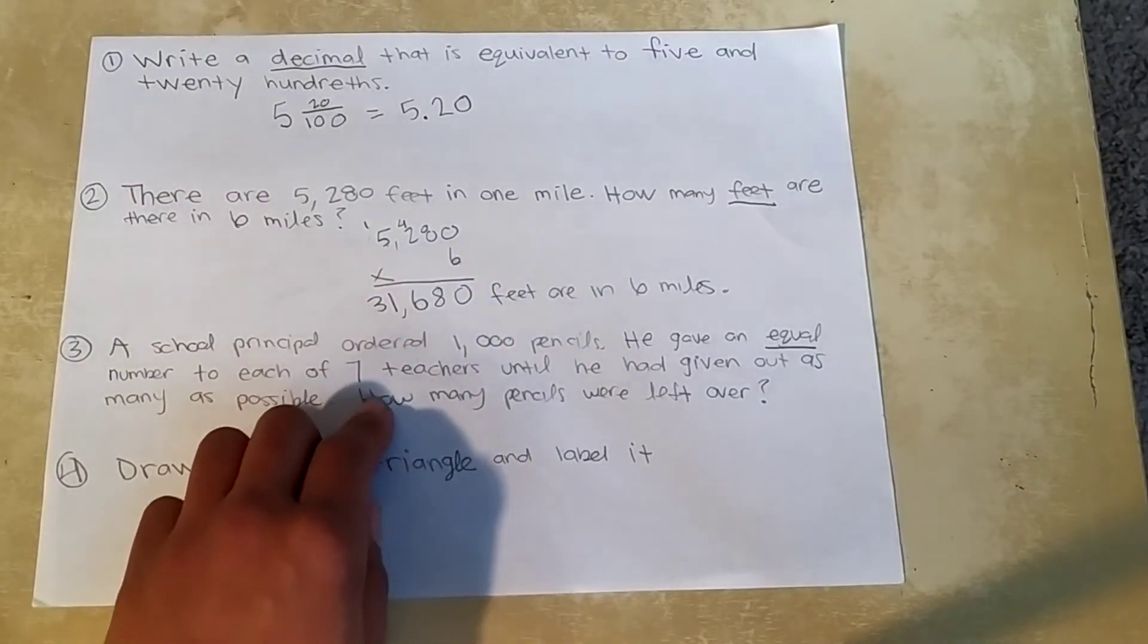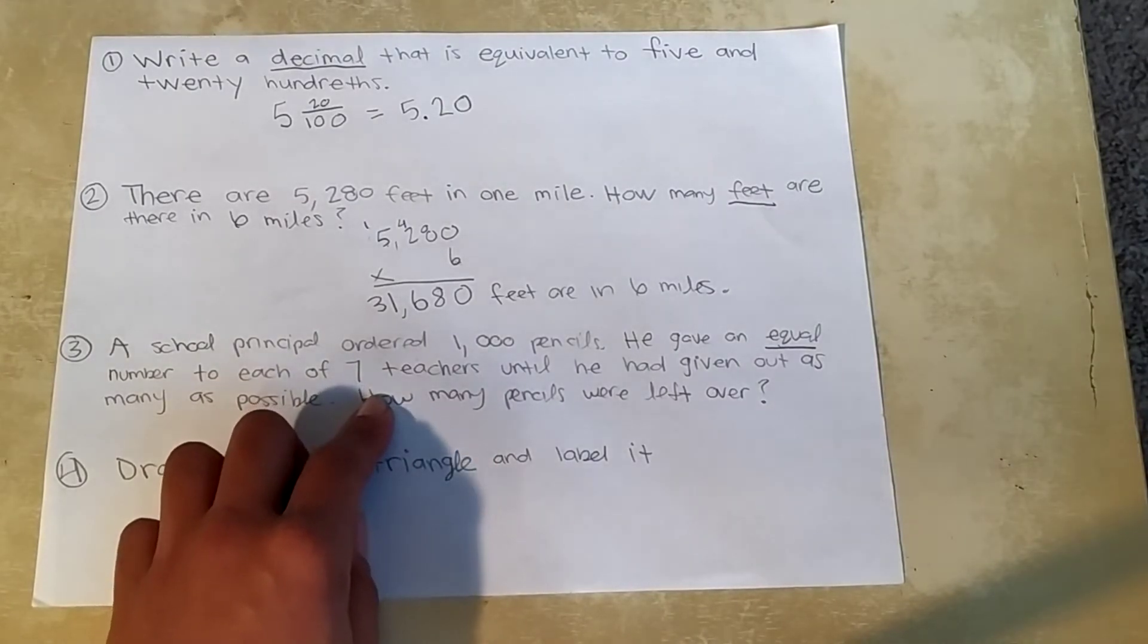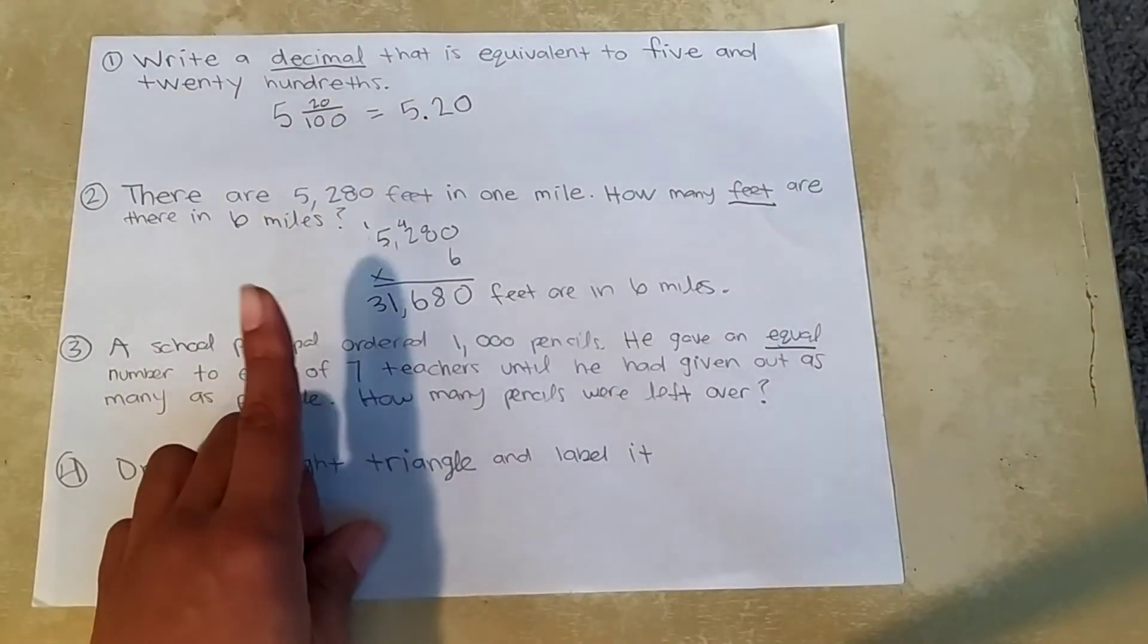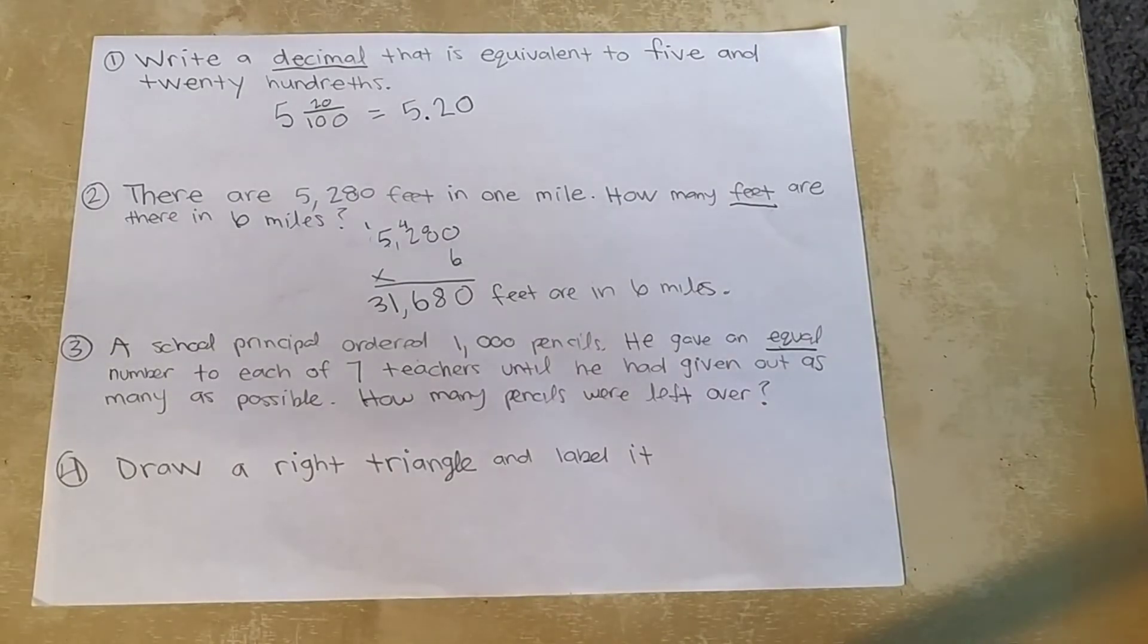Equal number to each of seven teachers until he had given out as many as possible. How many pencils were left over? So he has 1,000. He has seven teachers and they're all going to get the same amount of pencils. So no one is special. We all get the same amount.